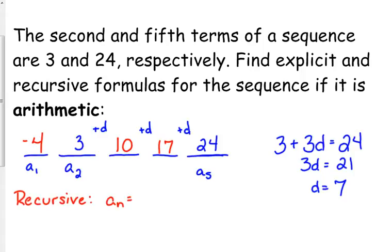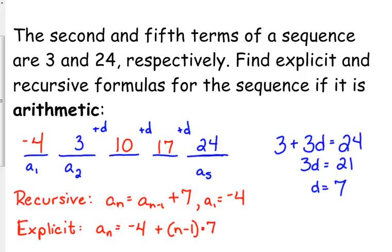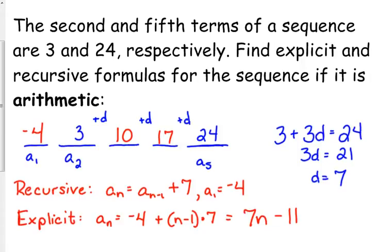If we want to do the formulas for this, the recursive formula would be a sub n is equal to a sub n minus 1 plus 7, a sub 1 being negative 4. The explicit would be a sub n is equal to the first term plus n minus 1 times the common difference. If we need to simplify that, that would be 7n minus 11, because negative 4 minus 7 is negative 11.